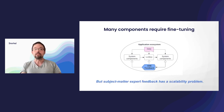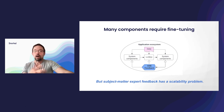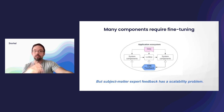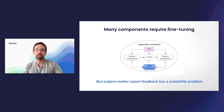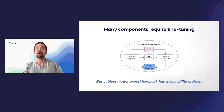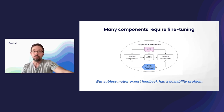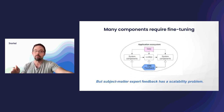Furthermore, a lot of these components require fine-tuning. We need to fine-tune large language models for domain-specific applications, and we're also finding that the other components they interact with also require fine-tuning. This fine-tuning requires subject matter expert feedback. However, this has a scalability problem — subject matter experts are expensive, and we don't want to pay them to look at individual data points. That is not only cost prohibitive, it's not even realistic from a management point of view.